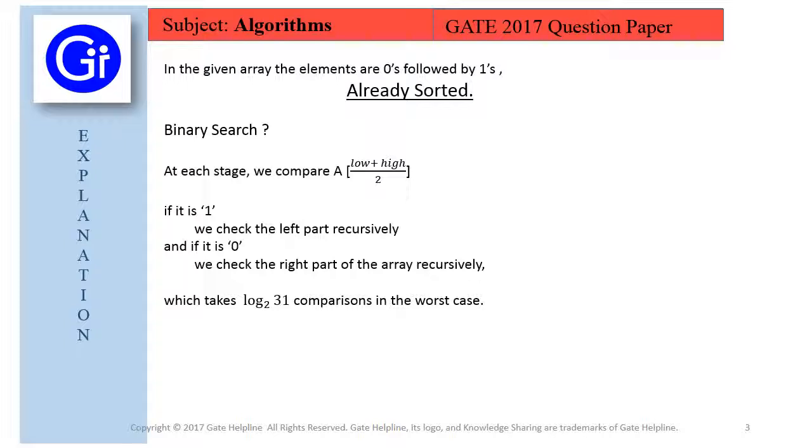So here we are having 31 number of elements. So the answer will be log base 2 of 31, which equals to 5.